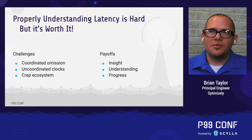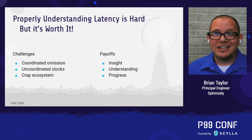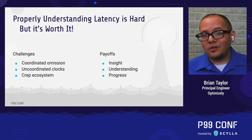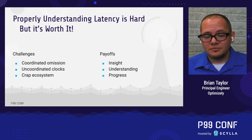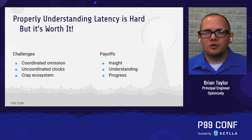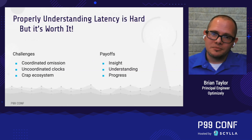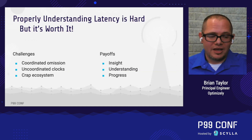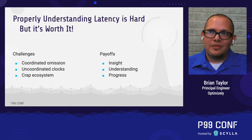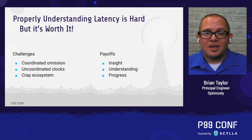Hopefully I've started to convince you that even though understanding latency well is difficult, it's worth it. You've got the key challenge I dived into — coordinated omission — as well as uncoordinated clocks, which I also had to deal with. And again, the ecosystem is garbage. Most load generators you'll just pick up and use suffer from coordinated omission. Don't trust any load generator until you've at least Googled the name of that tool and 'coordinated omission' — because this is a pervasive problem and most of our tools are garbage. Once you get through those challenges, though, there's a payoff. You get insight into how your system works. I went through three major surprises, having worked with the system for years with no idea what was lurking underneath. That led to better understanding, and ultimately, through an invasive but simple-to-explain change, led to significant progress and a large improvement in our tail latencies.